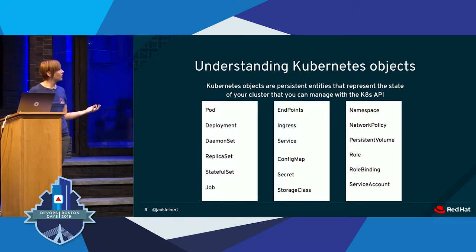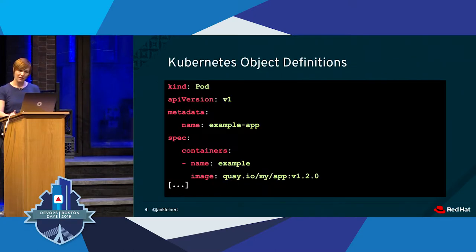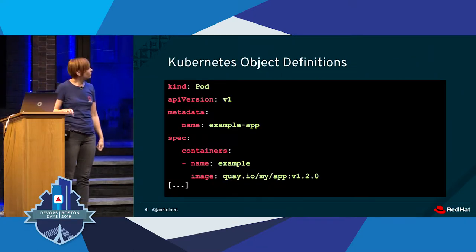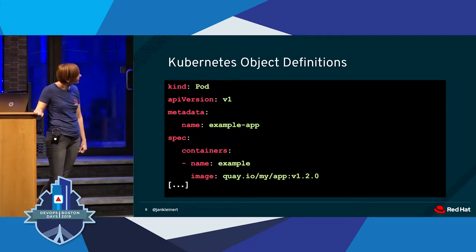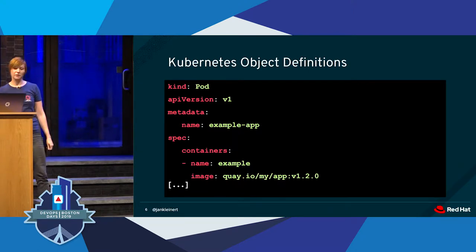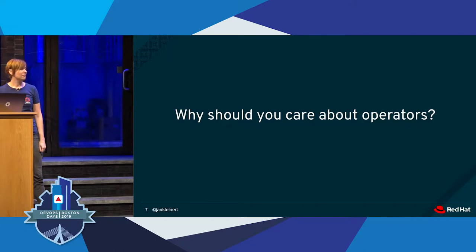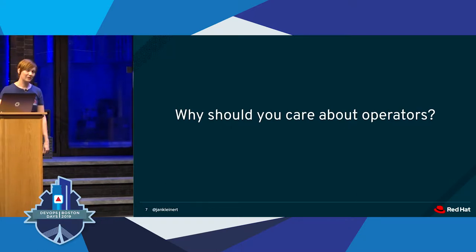You can manage your Kubernetes cluster using the Kubernetes API or through command line tools. An object definition looks something like this—this is part of the YAML for setting up a pod. You can see it has a type, some metadata, and in this case a container spec. We talked about Kubernetes there for about two minutes, but that's not what we're here to talk about really. We're here to talk about operators.